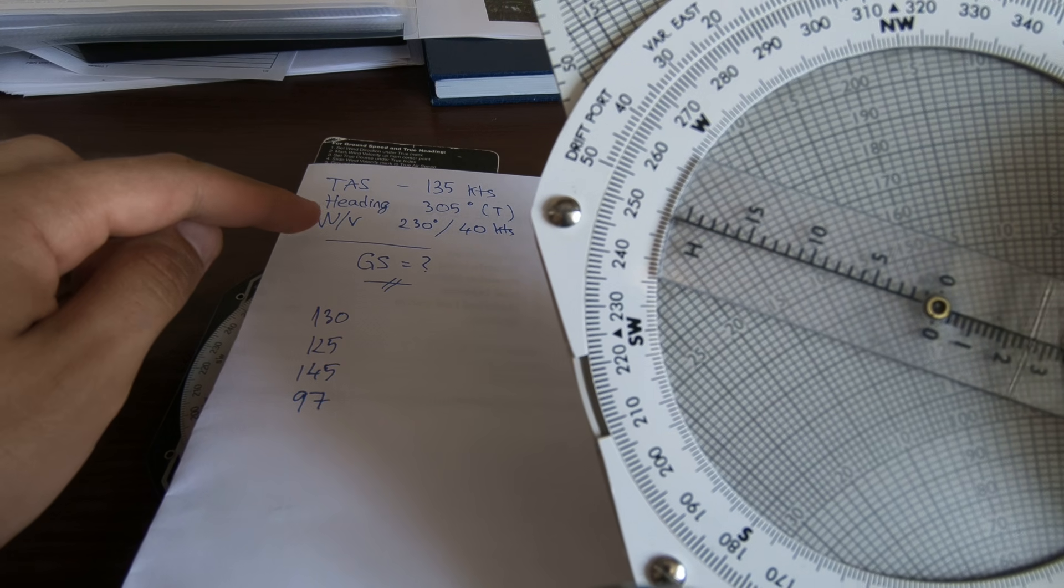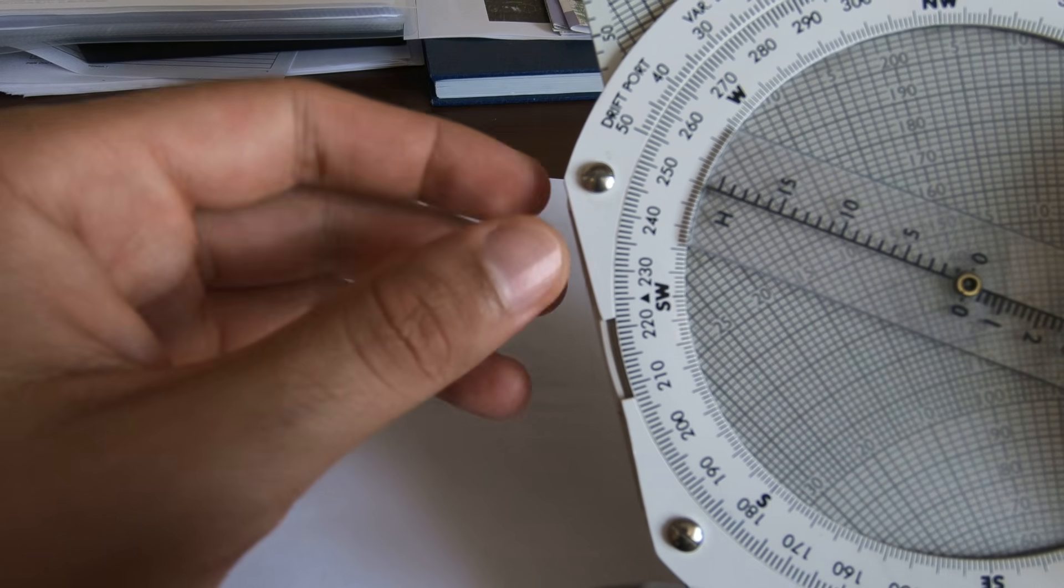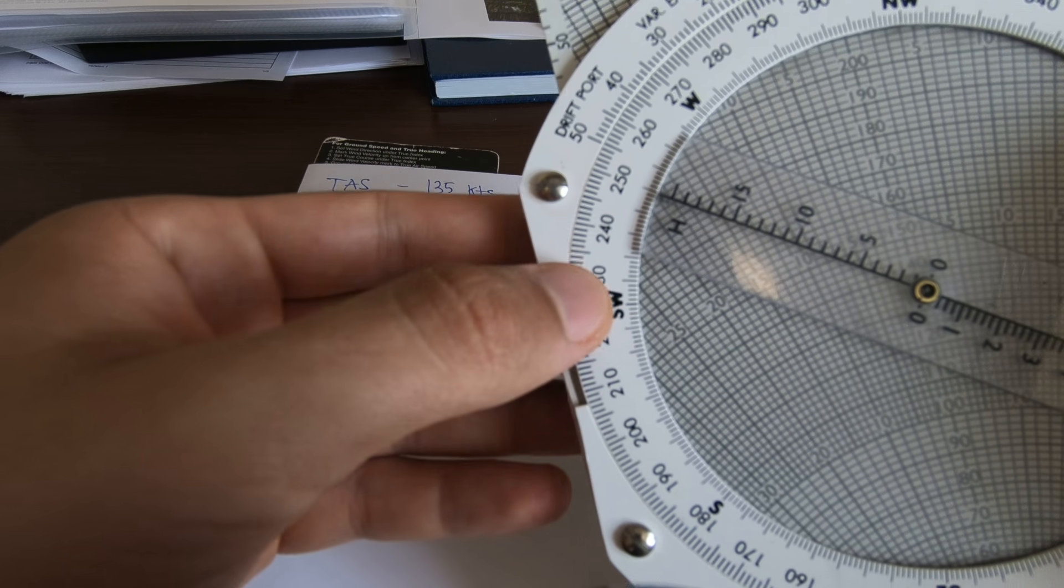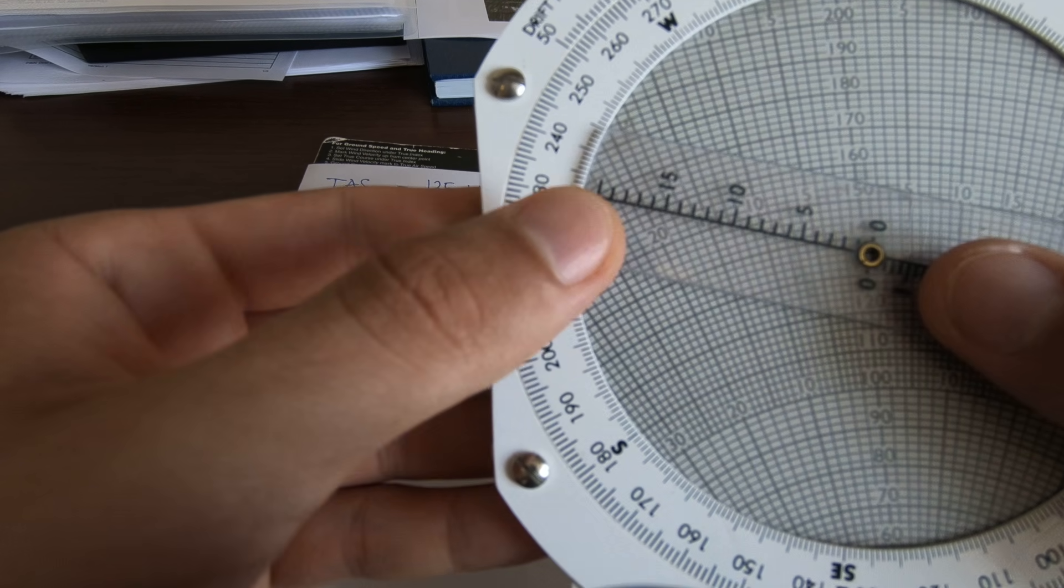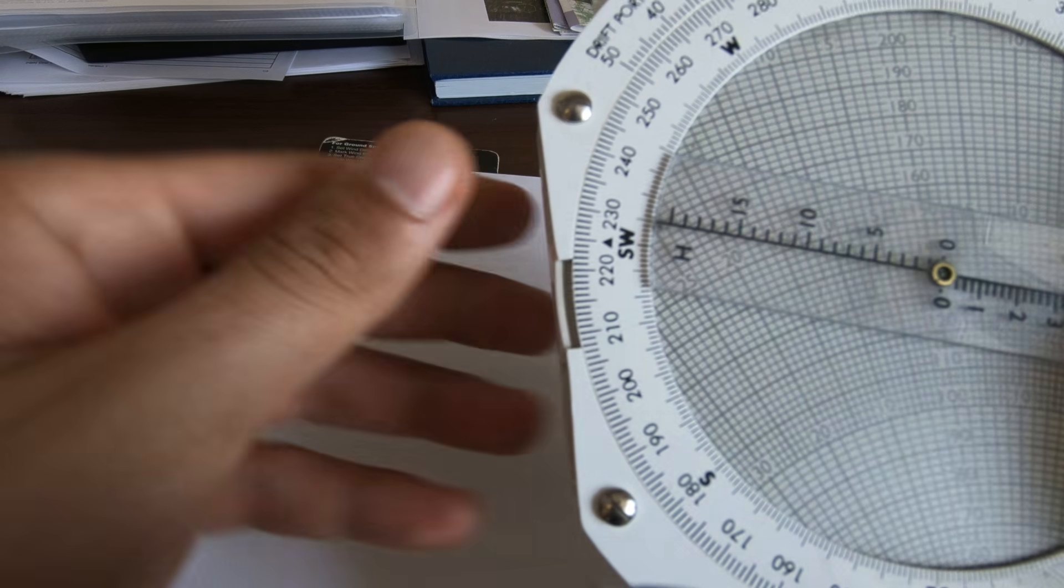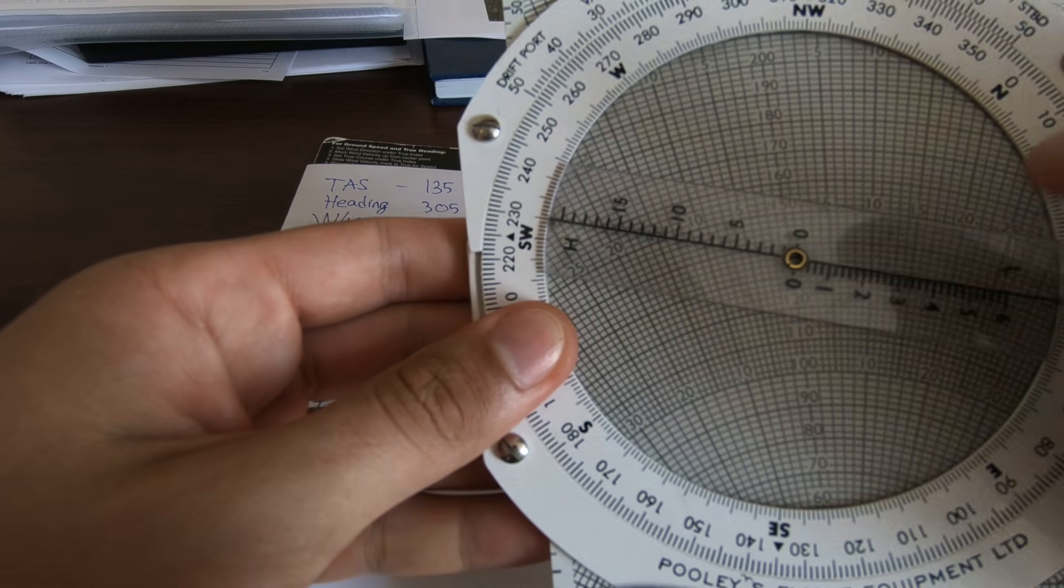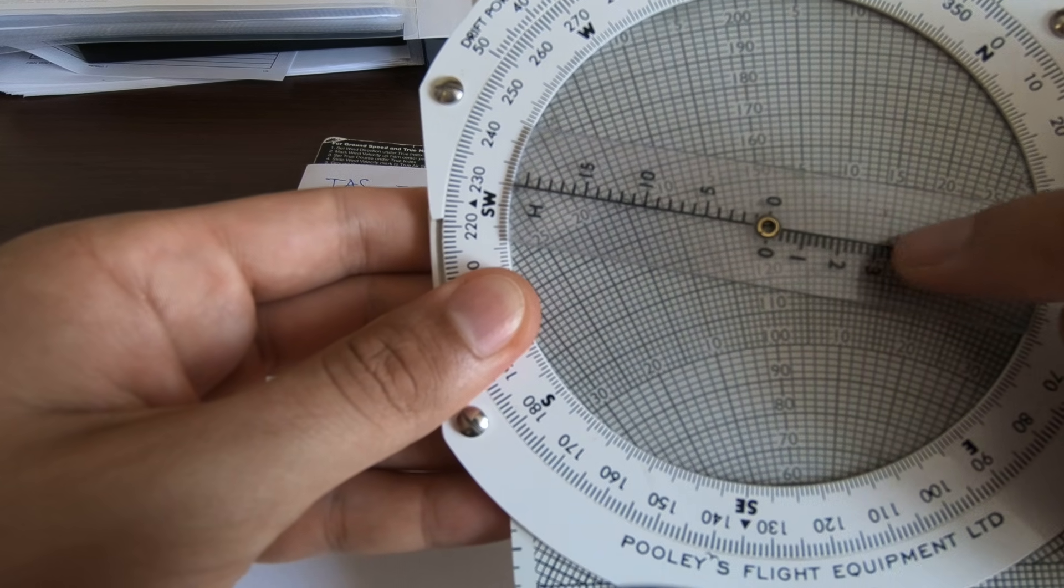And then we have the wind. Wind is 230, so we look for 230 which is right here. And then the speed is 40 of the wind. This is 10, 20, 30, 40.